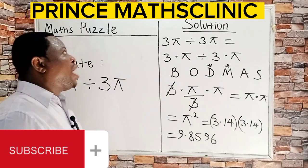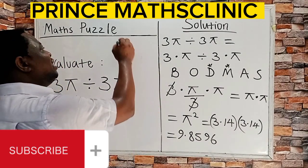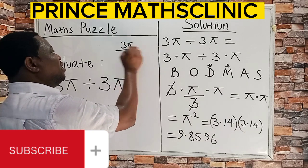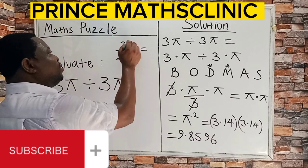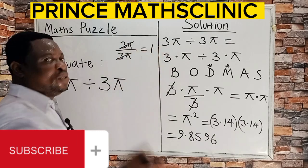Erroneously, some people will attempt this question and write 3π divided by 3π, and they say 3π cancels 3π to give 1. No, it is not correct.